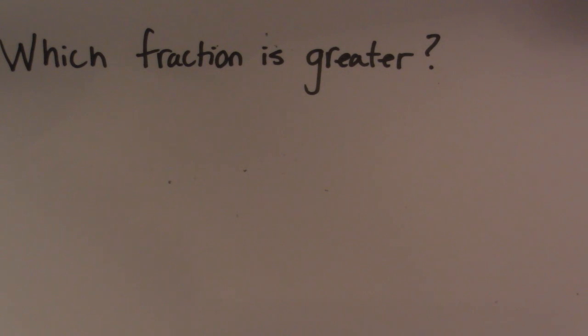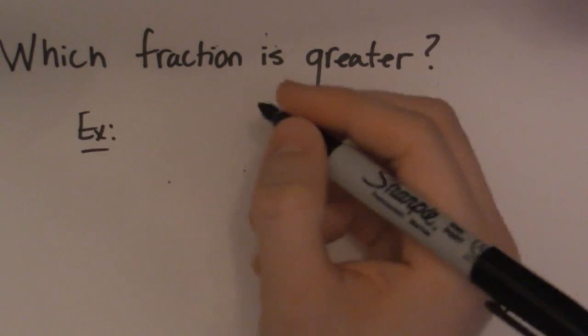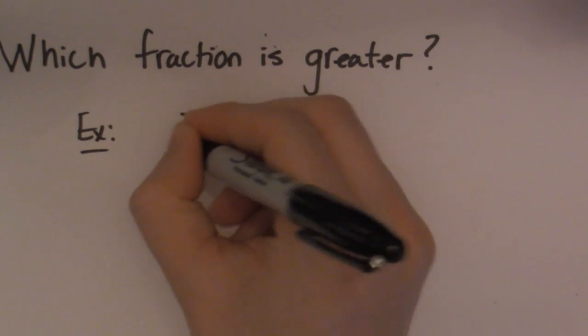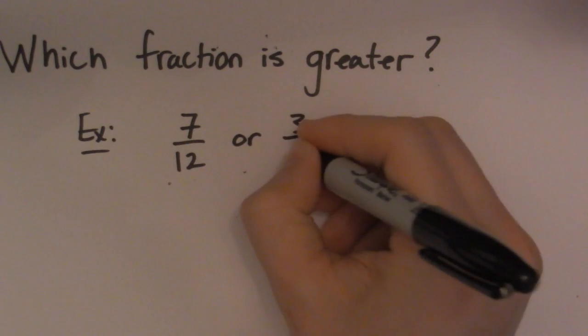Sometimes as simple as it might seem, it's one of those things. So I've got a couple fractions here. Let's start with an example and I'm going to get you guys to tell me which one is greater. So 7 over 12 or 3 over 4.